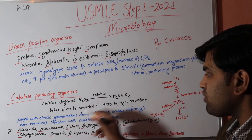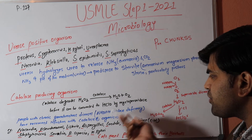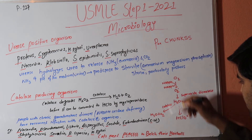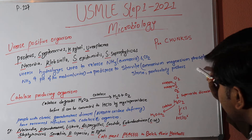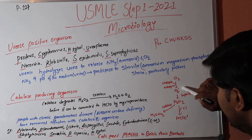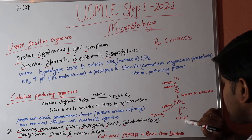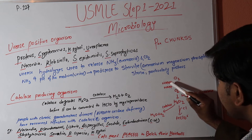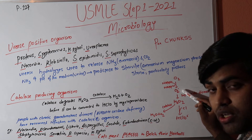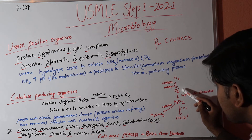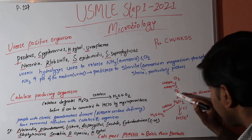To understand why CGD patients are susceptible, consider this: with NADPH oxidase deficiency, oxygen cannot be converted into superoxide. Since no superoxide is formed, no free radicals are produced, no hydrogen peroxide is formed, and therefore no hypochlorite is formed — so bacteria cannot be killed.